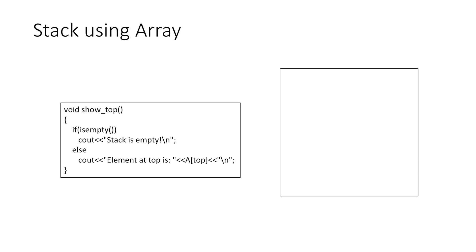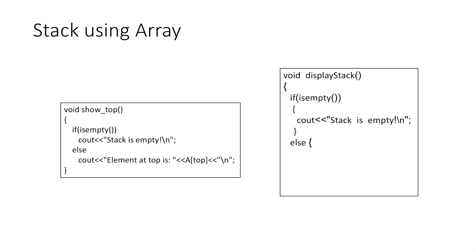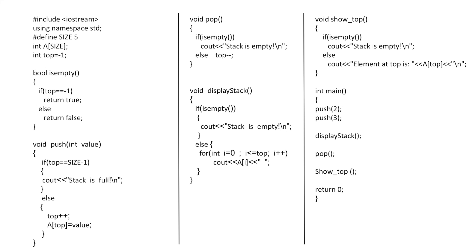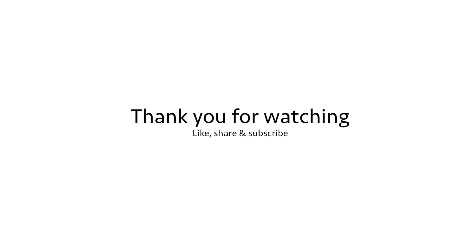Next we write a display function. Again we check if the stack is empty; if so we print that it's empty. Otherwise we start a for loop from i equal to 0 to i less than or equal to top, printing the element at each index. Here is a quick look at the entire C++ program implementing stack using array, with isEmpty, push, pop, displayStack, and showTop functions used in the main function. The source code is linked in the description. Thank you for watching.